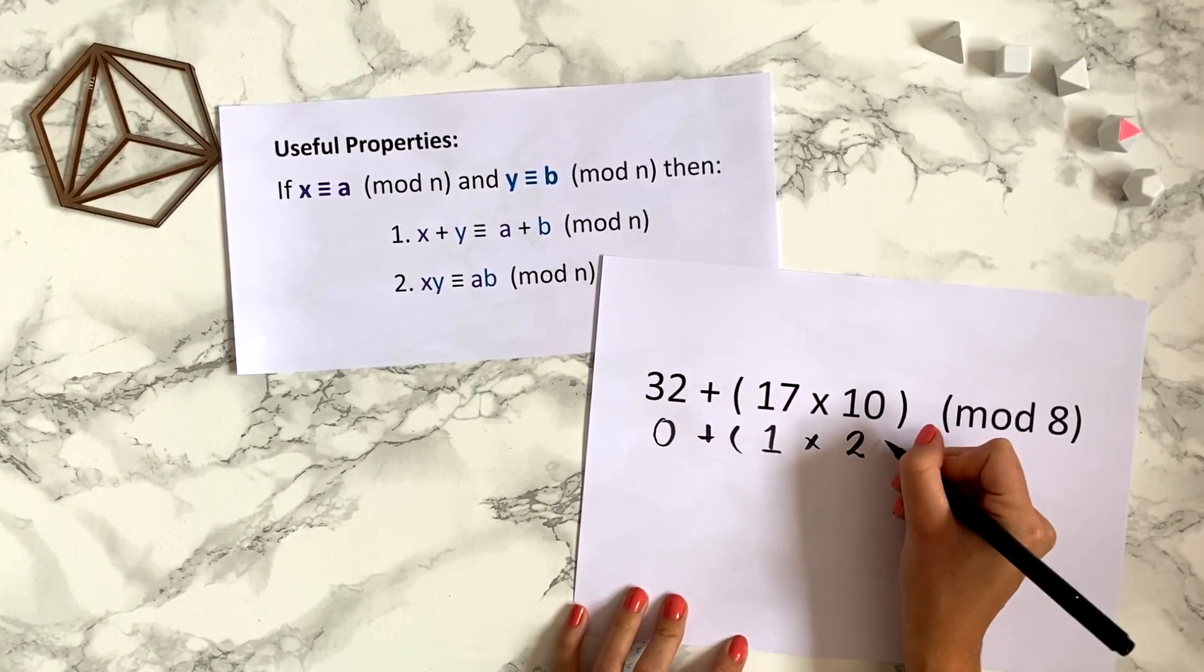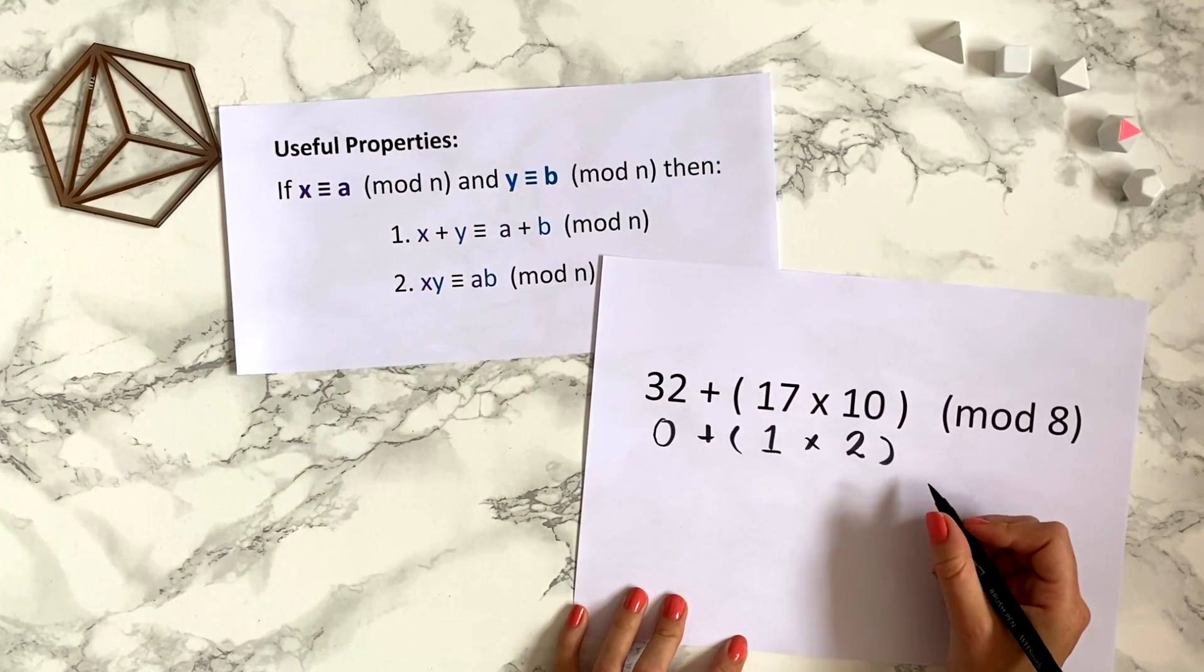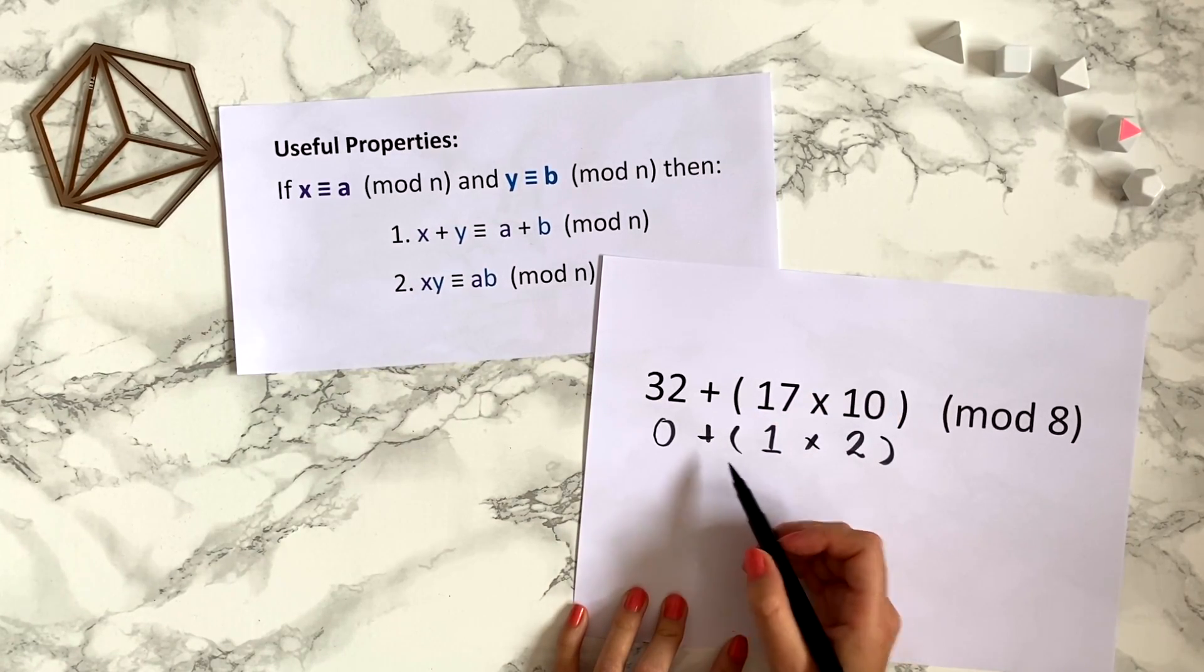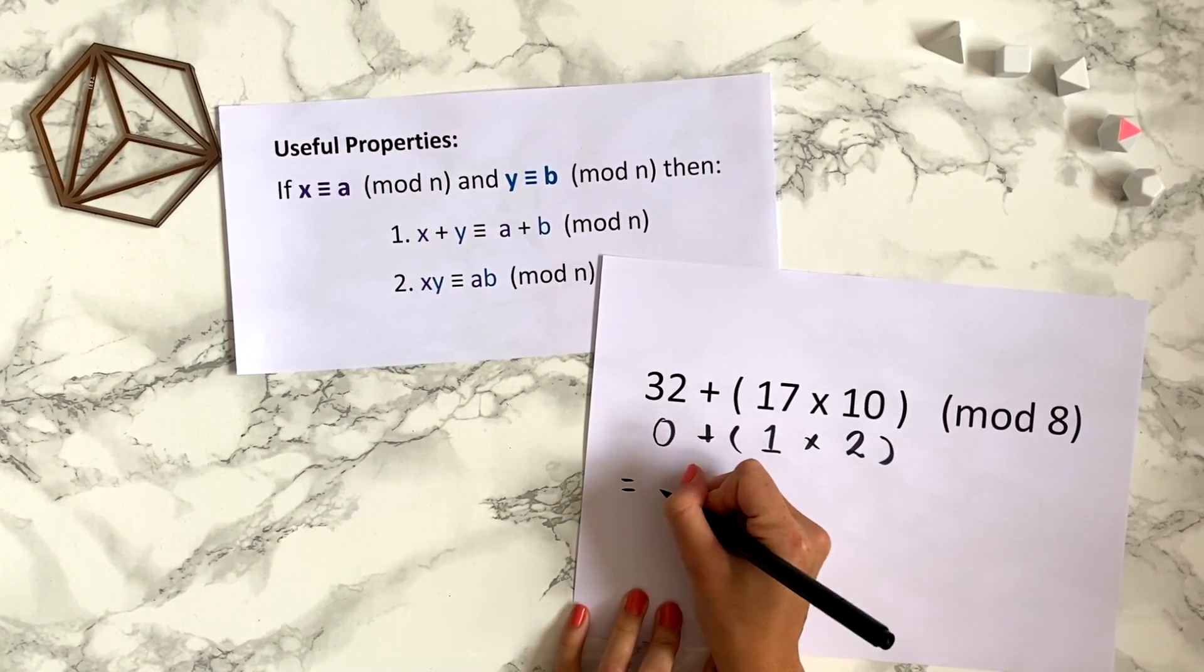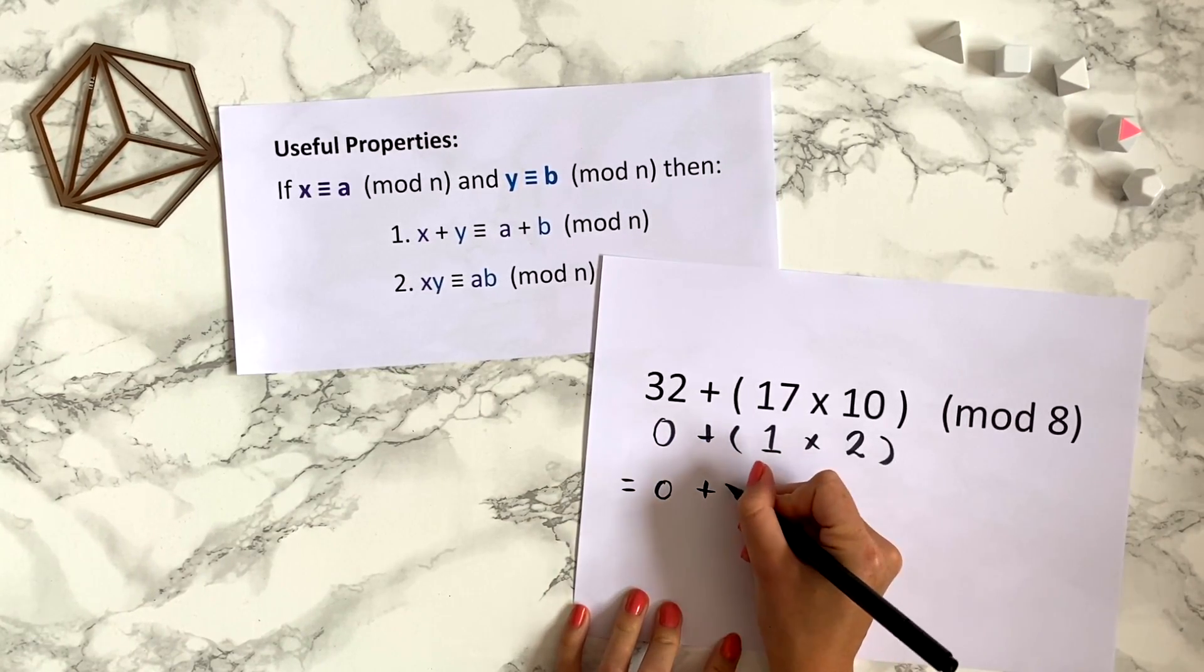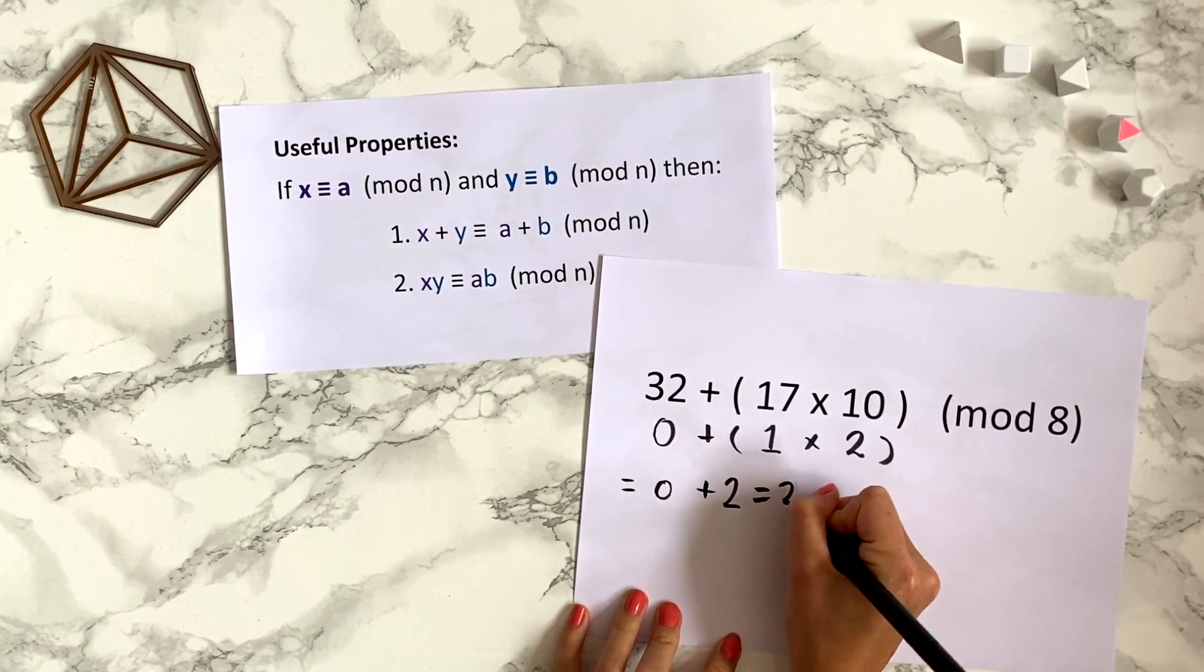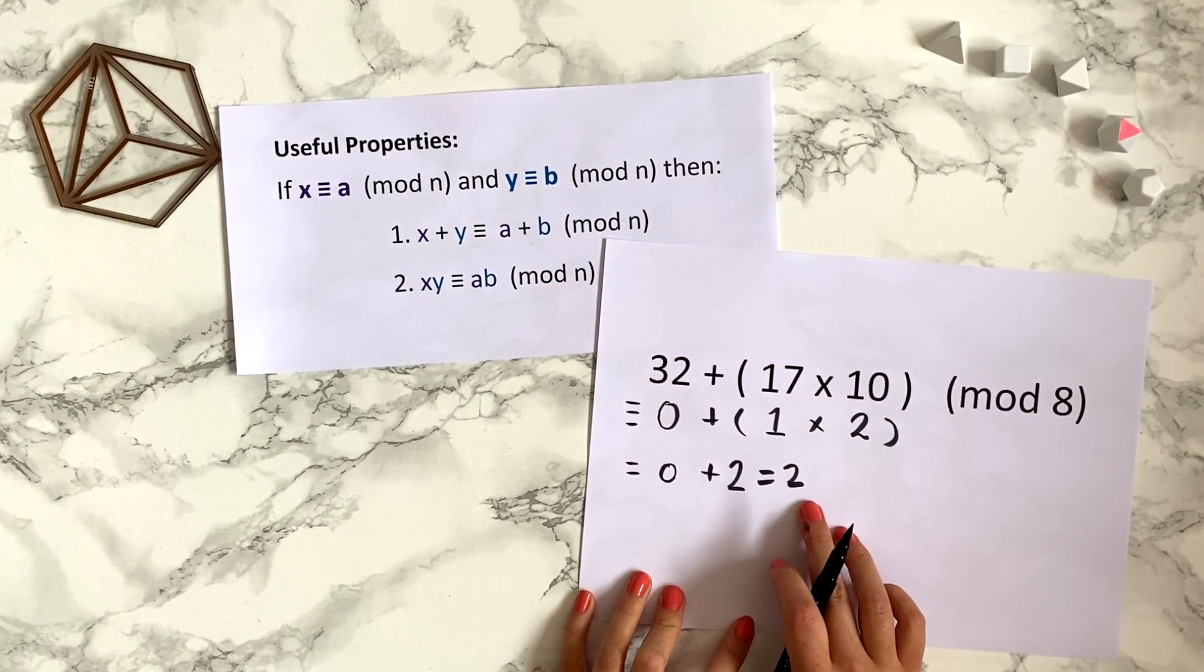So we can perform these calculations on these smaller numbers using this theorem. 0 plus, well we do the brackets first, 1 times 2 is 2, so this is equal to 0 + 2 which equals 2. So this mod 8 is just 2. So again you can see how this theorem saves us a lot of time.